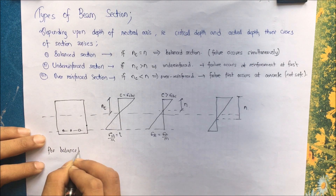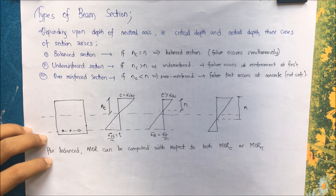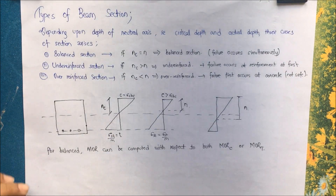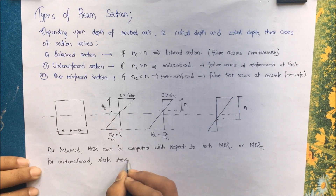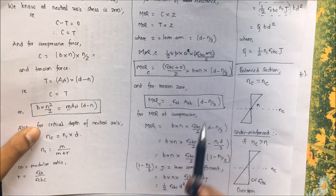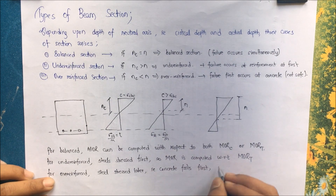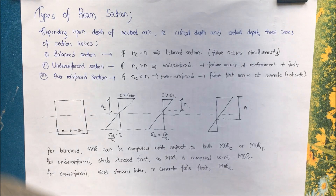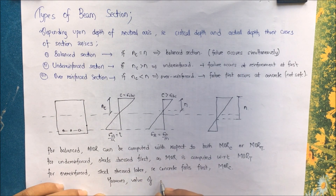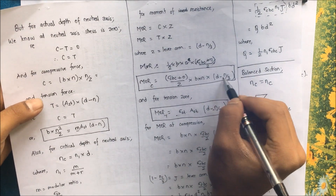For a balanced section, MOR can be computed with respect to either compression or tension — either formula applies. For an under-reinforced section, steel is stressed first, so MOR is computed using the moment of resistance considering tension. For an over-reinforced section, concrete fails first, so MOR is computed using the moment of resistance considering compression. However, the value of depth of neutral axis used should be the actual depth N, not the critical depth NC.